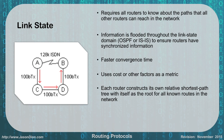That new protocol is link state. It requires all routers to understand the paths that all other routers take across the network. We're not counting hops anymore — we're counting the speed. In this example, I wouldn't go from A to B because that's a 128 kilobits-per-second link. But if I go A, C, D to B, I'm traveling at 100 megabits per second — about 80 times faster. This information is flooded throughout the link state domain, such as OSPF or IS-IS, to ensure routers have synchronized information, which also provides faster convergence time. Cost or other speed-based factors are used as the metric.